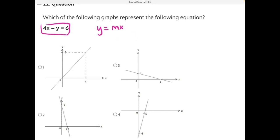And to do that we're going to have to isolate our variable y. 4x minus y equals 6. Let's start by adding y to both sides, the opposite of subtraction. These two will cancel, leaving us with 4x equals 6 plus y.